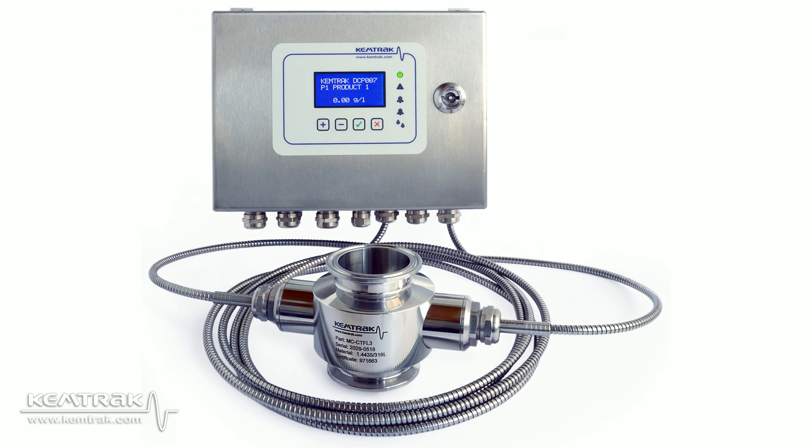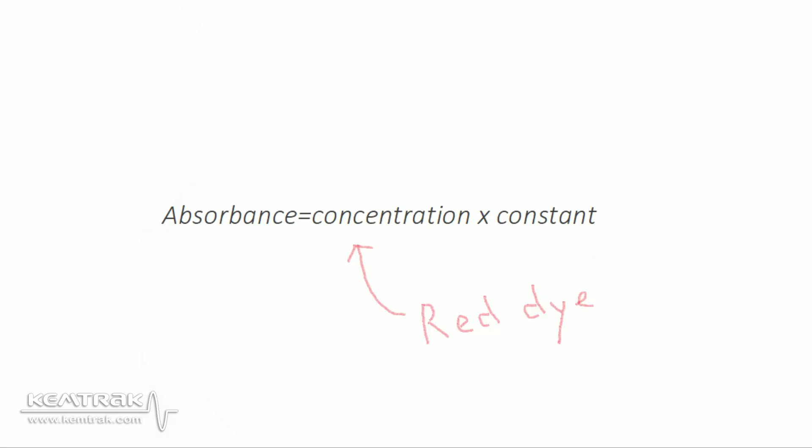Now, what is that? Simply put, it is a measure of the capacity of a substance to absorb light at a specific wavelength. According to Beer-Lambert's law, the absorbance is equal to the concentration times the constant. In our case, the absorbance is going to be proportional to the red dye concentration.